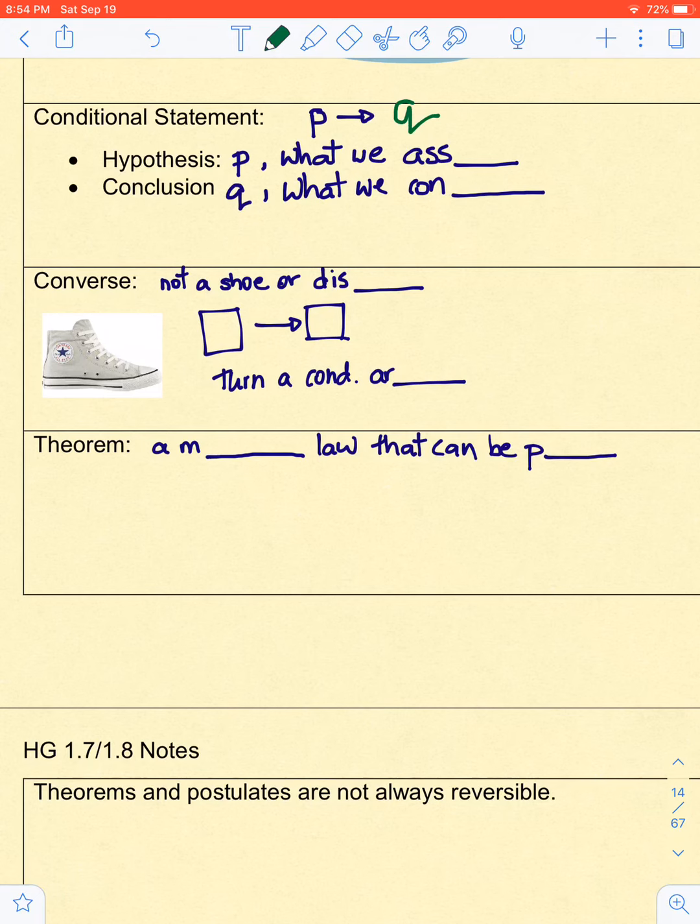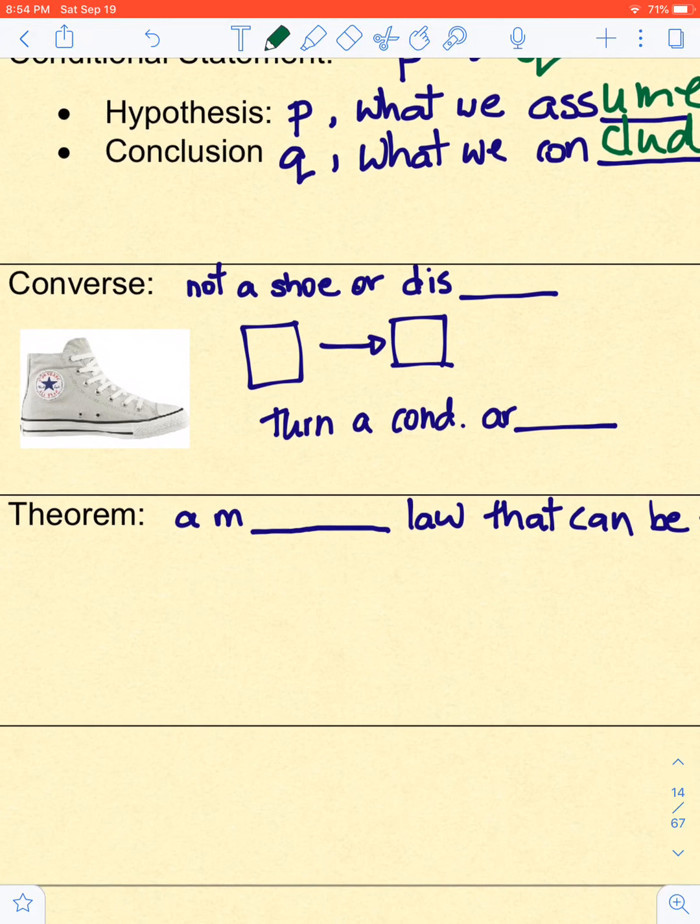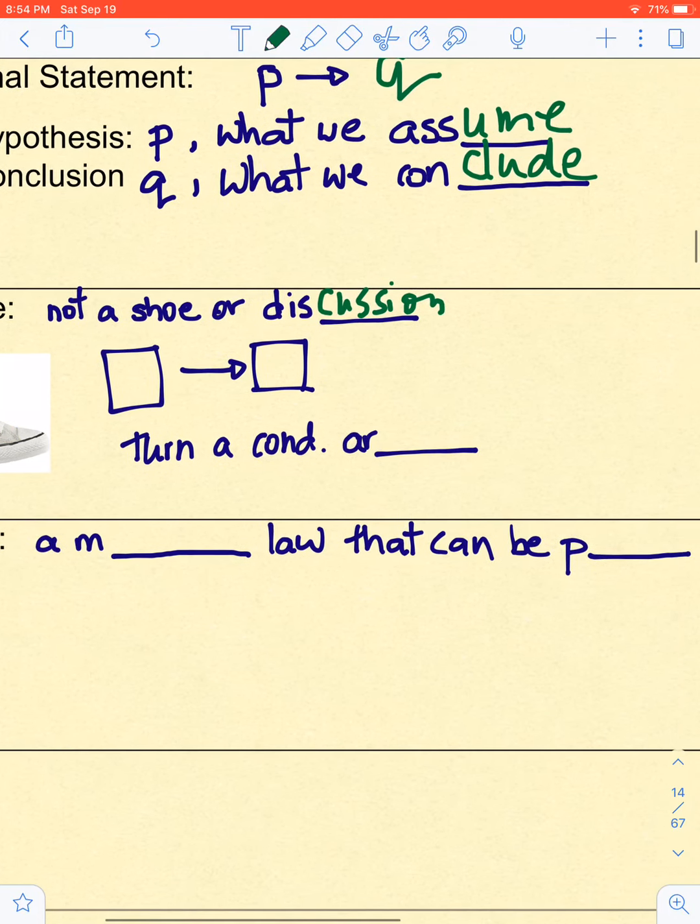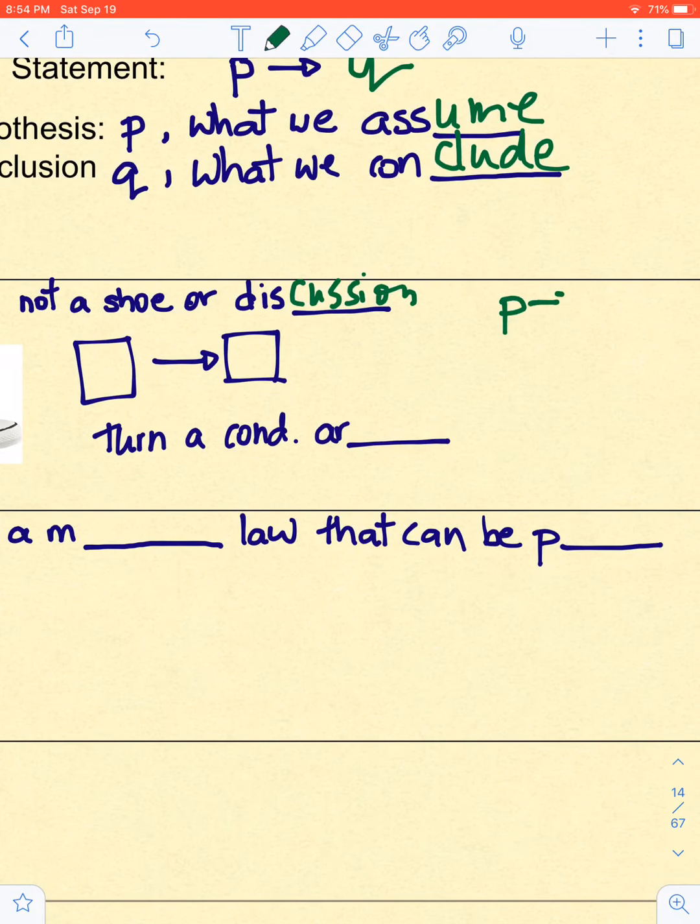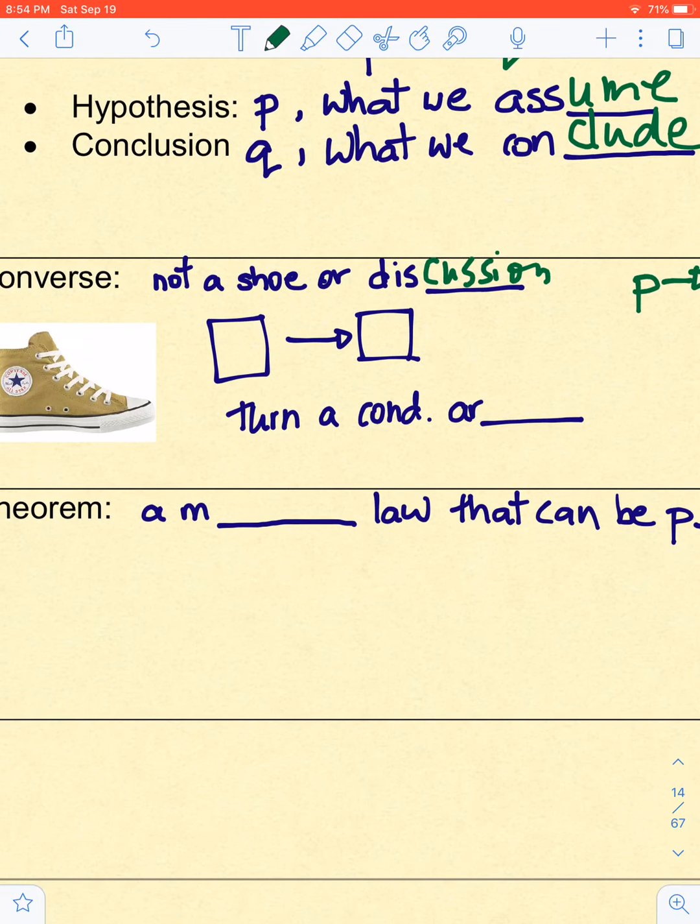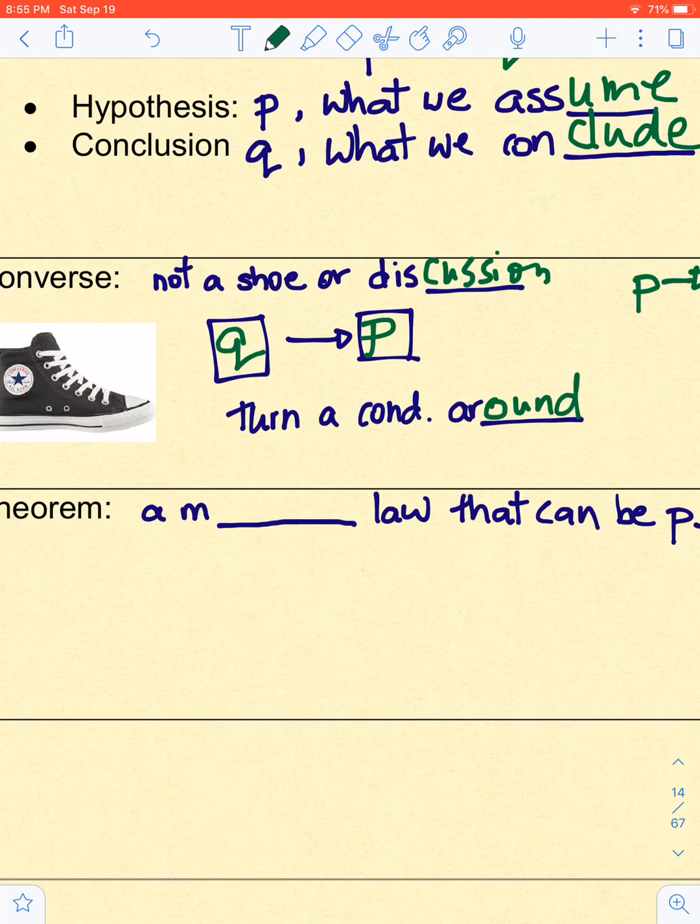All right. Cute little gif there. Now, the converse that we are going to speak of is not a shoe, nor is it a discussion. So, some people say to converse or to wear a converse. That is not what we're talking about. So, if the conditional is if P then Q, then the converse would be if Q then P. So, we turn a conditional around. We flip it on its head, so to speak. And the reason we bring that up is that because definitions are reversible, so you can reverse the order.